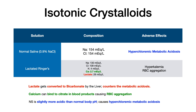The main adverse effect for normal saline is an increased risk of hyperchloremic metabolic acidosis. Lactated ringer solution has 130 milliequivalents per liter of sodium, 109 milliequivalents per liter of chloride, 4 milliequivalents per liter of potassium, 2.7 milliequivalents per liter of calcium, and 28 milliequivalents per liter of lactate.